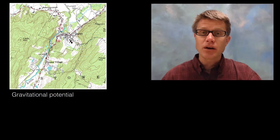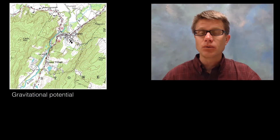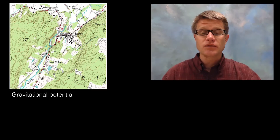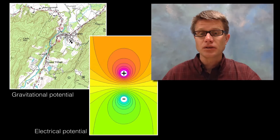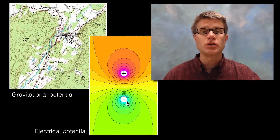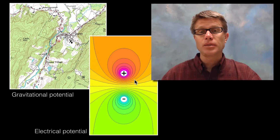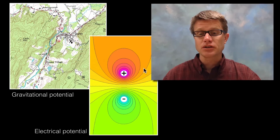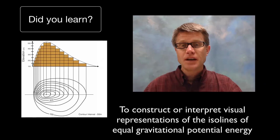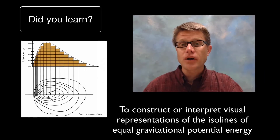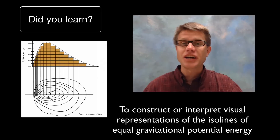In a topographic map those contour lines show areas of equal elevation. But what we're going to do is use this as an analogy — in the next video we'll transfer towards electric equal potential lines. If we have a positive and a negative charge there are going to be electric fields around that, and these lines represent areas of equal potential. In the topographic map it's gravitational potential, but over here it's going to be electric potential. I hope you learned to represent these contour lines as isolines — lines of equal gravitational energy.